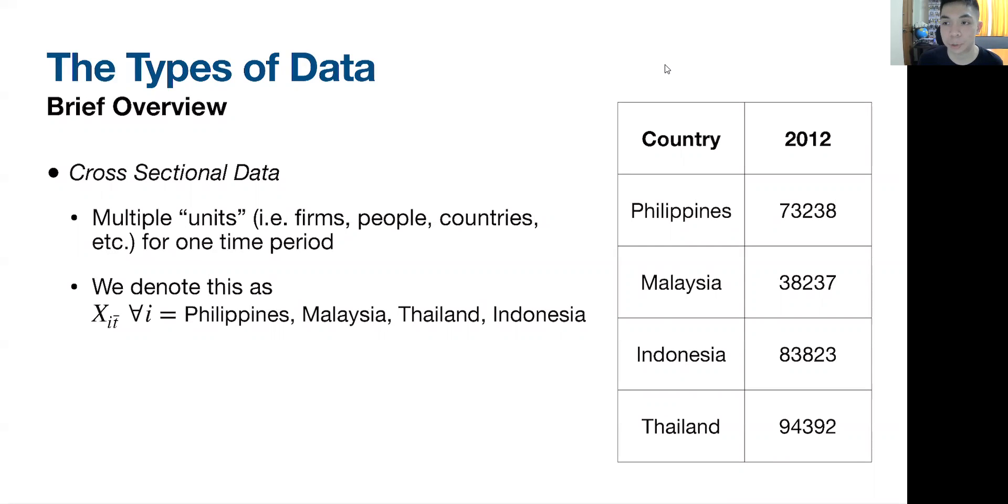Hi everyone and welcome to this short video on the types of data and variables that we typically encounter in applied econometrics. We're going to go first on the three most common types of data structures that we have in applied econometrics, and then we're going to discuss a couple of types of variables.